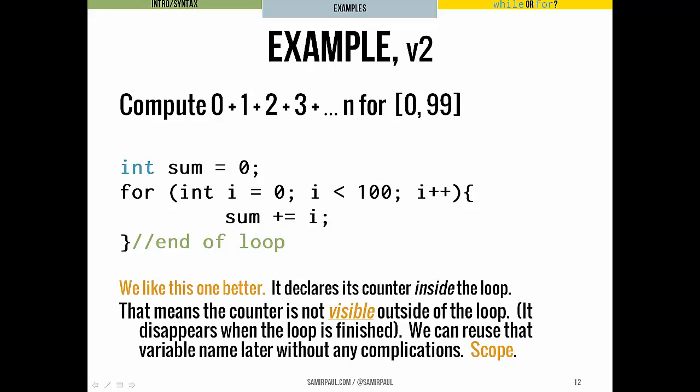We'll talk more about what exactly this means in the future, but the main idea is that it means that this counter variable i is only visible inside this loop. And it means that when the loop is finished, this variable disappears and we can't access it anymore.